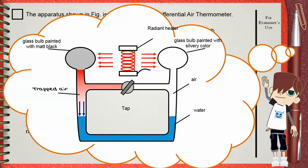So the water level will not be the same anymore. On the left hand side, the water level will go down. With the same amount on the right hand side, the water level will go up. This is due to the expansion of the air trapped on the side of the matte black bulb.